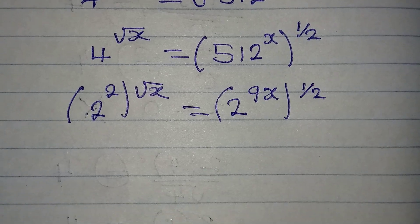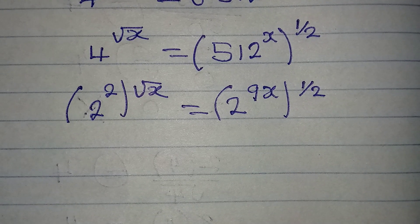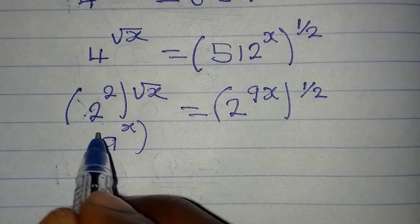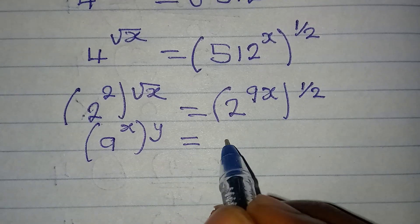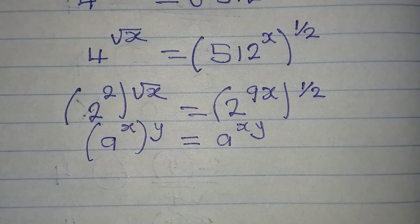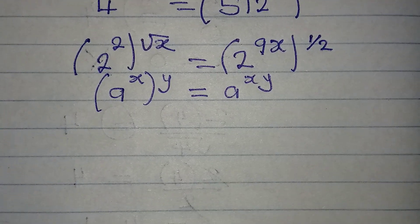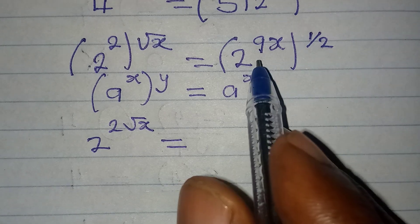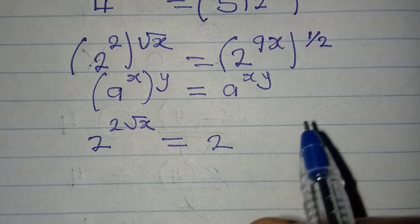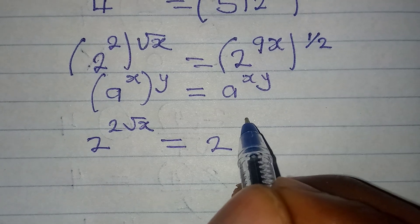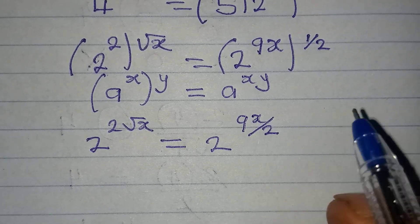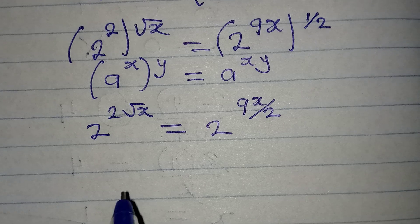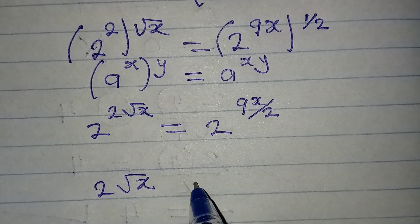Now let's multiply the powers, because there's a law that says if you have a to the power of x to the power of y, it's the same as a to the power of xy — you just multiply the powers. From here we have 2 to the power of 2 root x, which will be equal to 2 to the power of 9x over 2. Now we have the same base, therefore we can work with the powers, meaning that 2 root x is equal to 9x over 2.